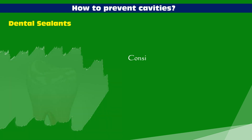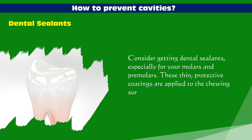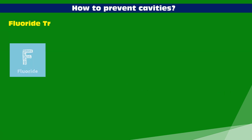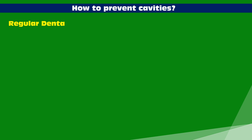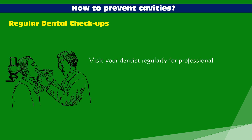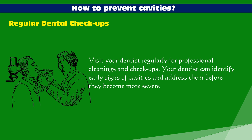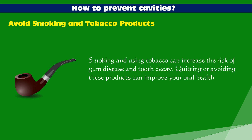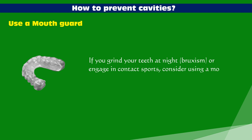Consider getting dental sealants, especially for your molars and premolars — these thin protective coatings are applied to chewing surfaces to prevent plaque buildup in deep grooves. Ask your dentist about fluoride treatments if you are at higher risk for cavities. Visit your dentist regularly for professional cleanings and checkups so early signs of cavities can be identified and addressed. Avoid smoking and tobacco products, as they increase the risk of gum disease and tooth decay. If you grind your teeth at night or engage in contact sports, consider using a mouth guard to protect your teeth.